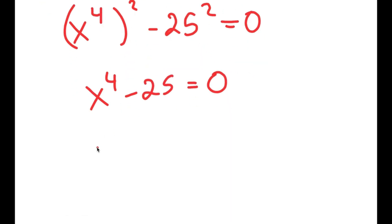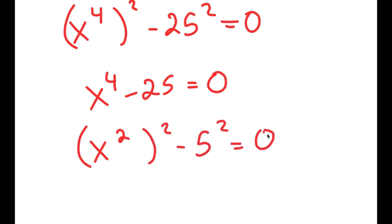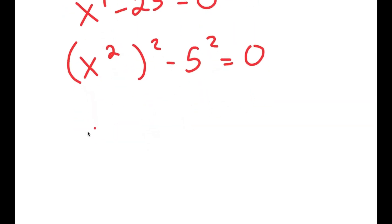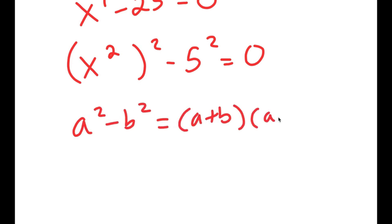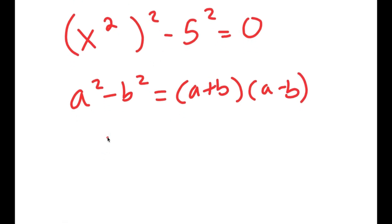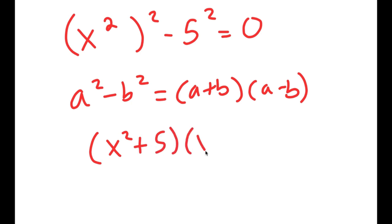From here, I'm going to rewrite this as x squared to the power of 2 minus 5 squared is equal to 0. Now I can use the formula a squared minus b squared equals a plus b times a minus b. So this turns into x squared plus 5 times x squared minus 5 is equal to 0.